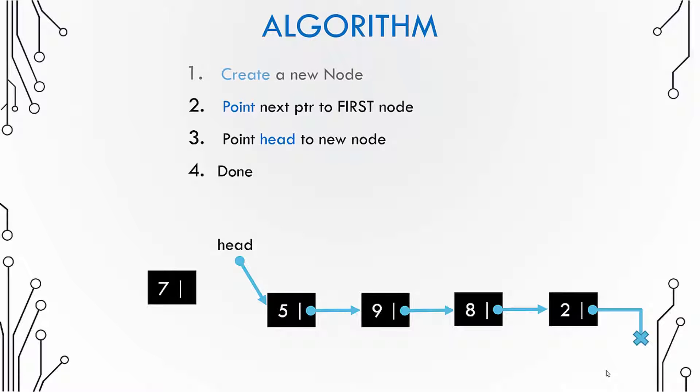Now since we are prepending a new node, we need to point that new node to the first node so that the new node becomes the first node.